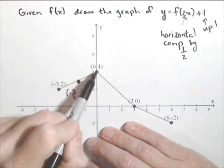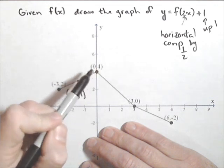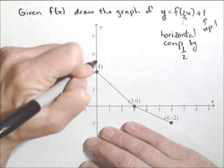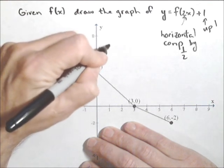Now this will be kind of interesting. The x value here is 0. You multiply that by a half, it's still 0. So the horizontal compression is not going to move it anywhere, so it's just going to go up vertically by 1. So that'll be the point (0, 5).